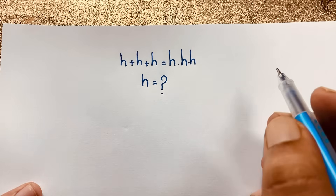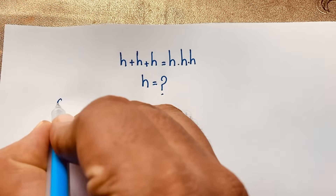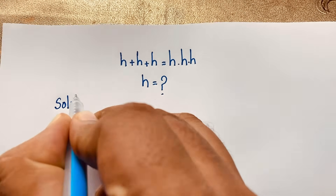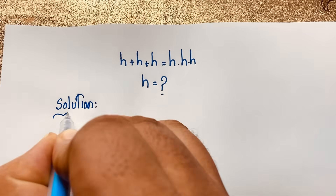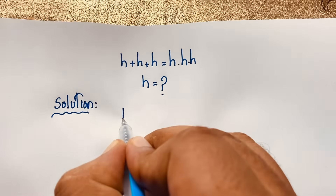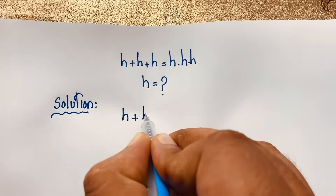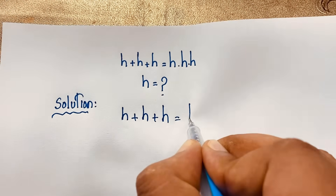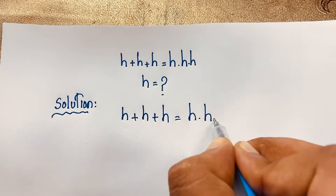How to solve this interesting math problem? Our question is: h plus h plus h is equal to h times h times h.